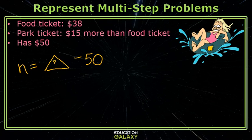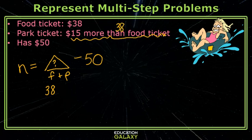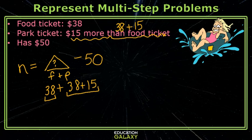So how do I get this total? Well, it would be the price of the food ticket plus the park entrance ticket. I know the price of the food ticket is $38. The park entrance ticket is $15 more than the food ticket, so it's not just $15 — it's the food plus $15. So here I have the price of the food ticket and here I have the price of the park entrance ticket. That's the total that she needs, so if I subtract $50, then I'll have what she still needs.